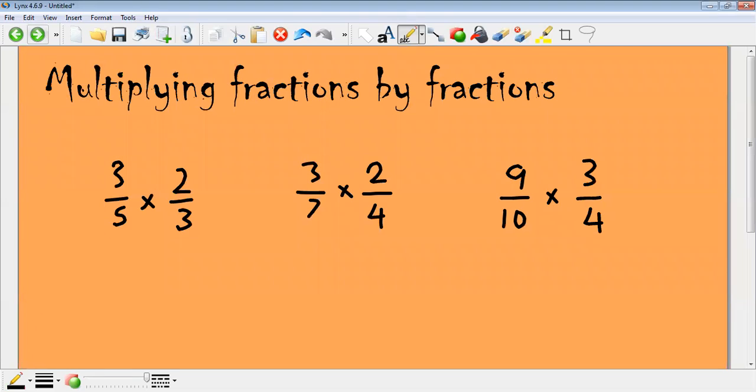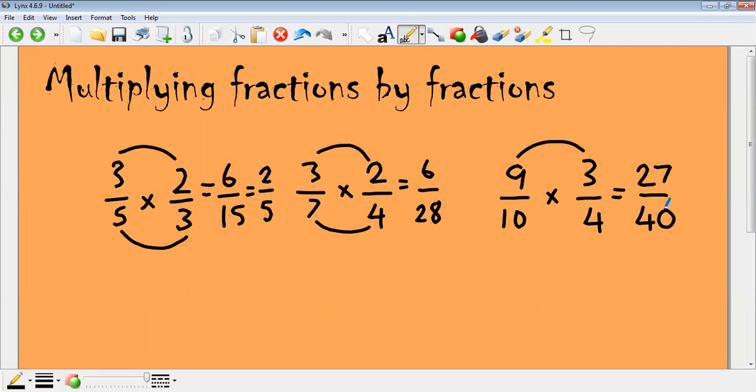So I'm just going to show you the formal approach to this. So again, we can just times across. Three times two is six, five times three is fifteen. You can simplify that, they are both in the three times table. Next one, six, seven fours are 28. You need to do 27 on the top, 40 on the bottom, and again if you need to or if you can, you would simplify down. I hope that helps. Enjoy your maths.